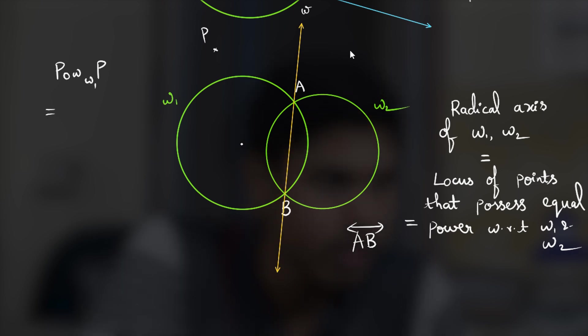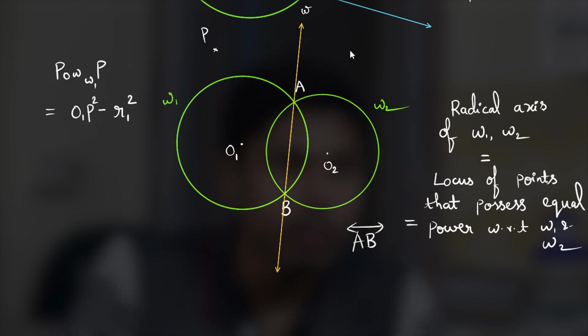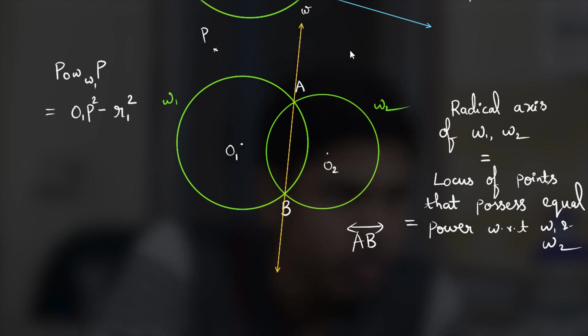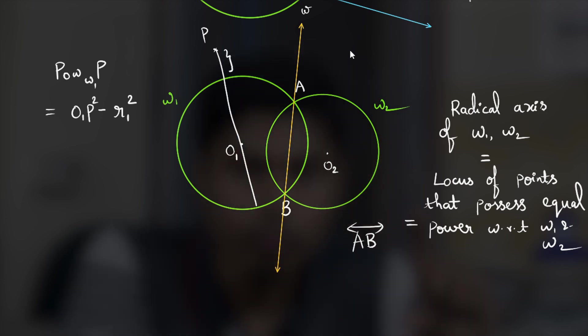It can be expressed as, if let's say O1 is the center of first circle O2 is the center of second circle, then it's just O1P square minus r1 square where r1, r2 are the radii of circle 1 and circle 2. This is because when you consider the line through the center this distance is O1P minus r and this distance is O1P plus r. Right so it will eventually be O1P plus r times O1P minus r that is O1P square minus r1 square.